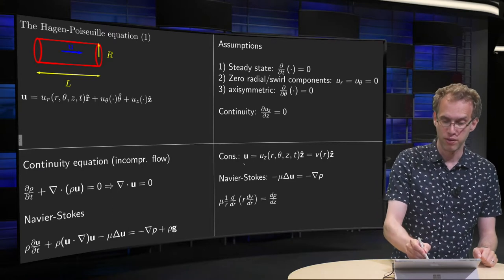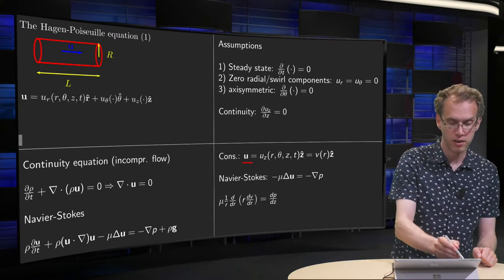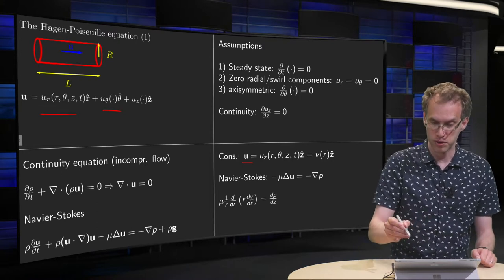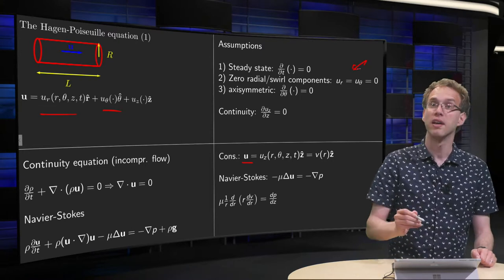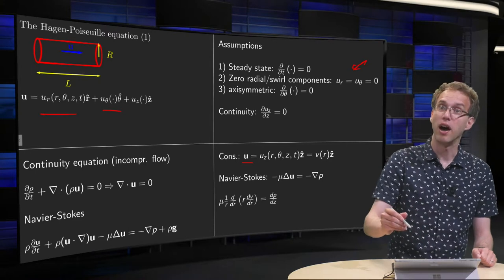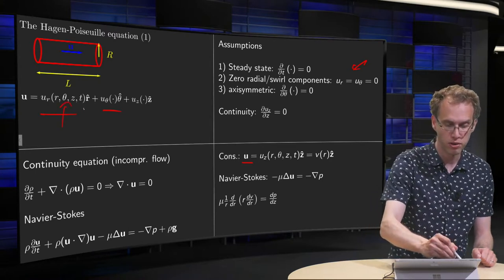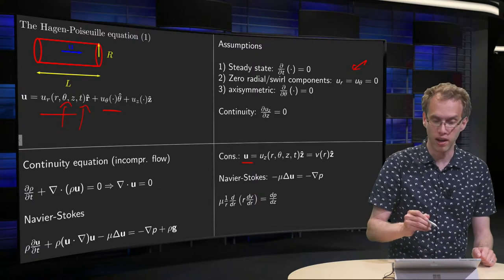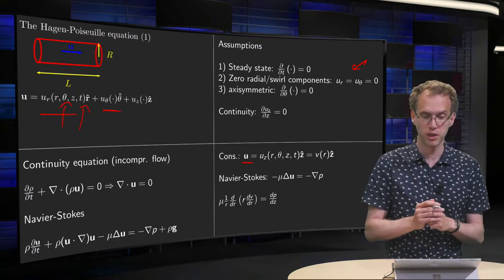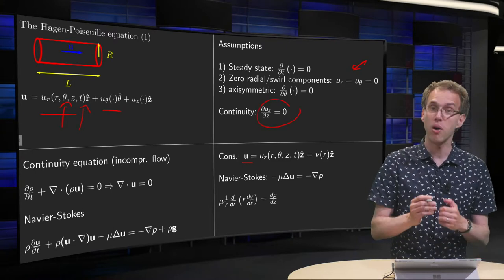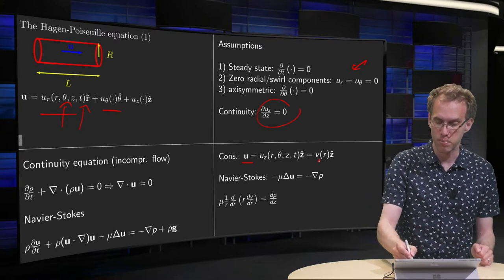What do we have left? We have U, these two components are already zero by assumption, and our u_z does not depend on theta, and also not on t, that is also an assumption, and the d/dz is zero, so we only have an r-dependence left.